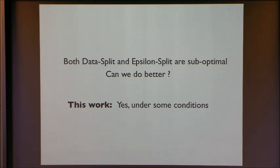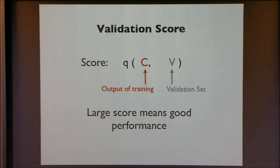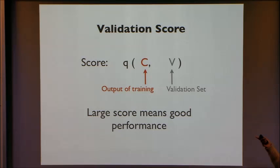It turns out we can do better under certain conditions, and we call our condition the stability condition. This is different from other kinds of stability already discussed. Before defining it, I need a couple of definitions. The first is the validation score. We use the validation dataset to determine which training output was the best, and the validation score is the measure of quality there. The validation score is a function that takes two arguments: the output of the training procedure, and the validation set. The larger this is, the better your performance.